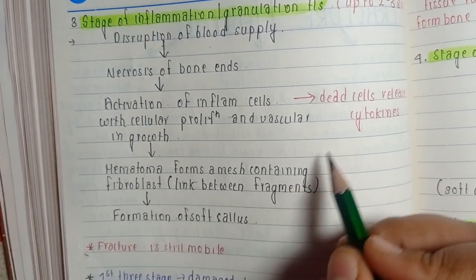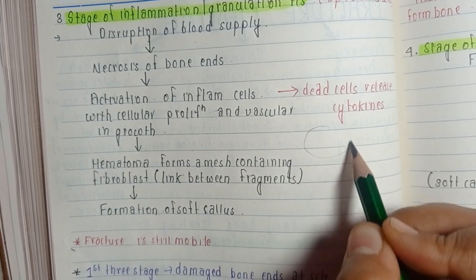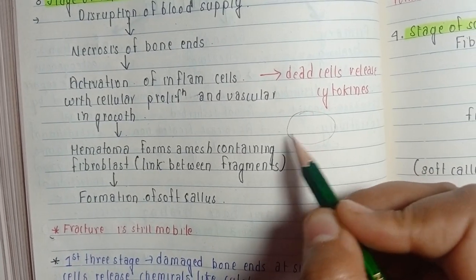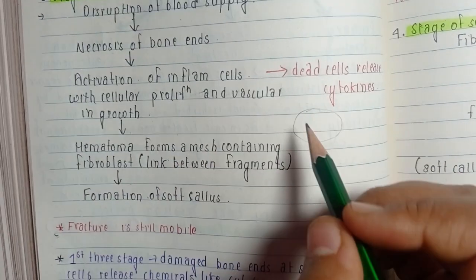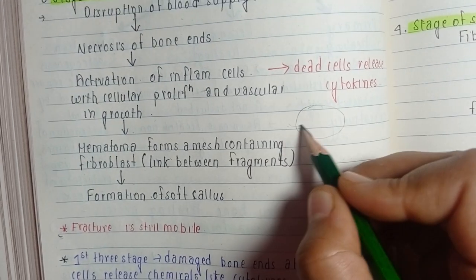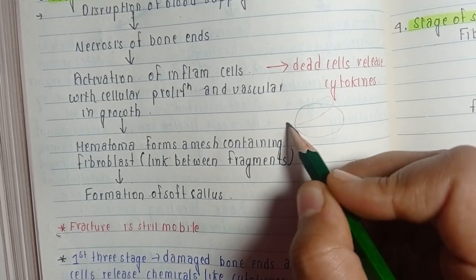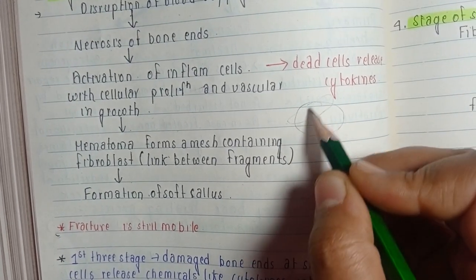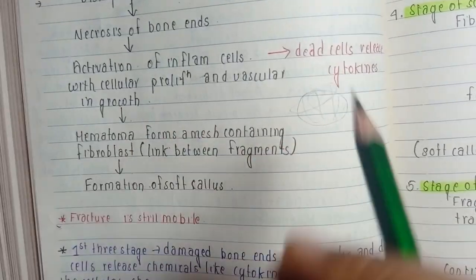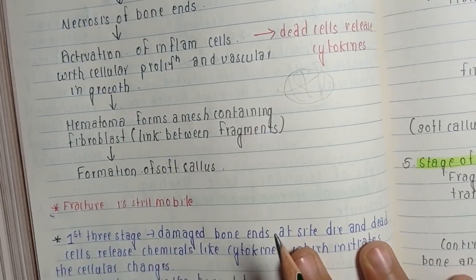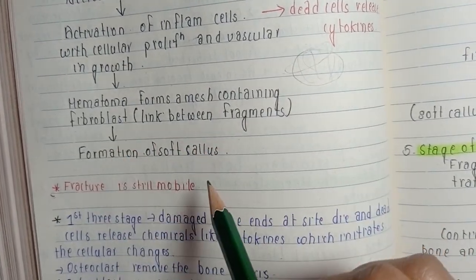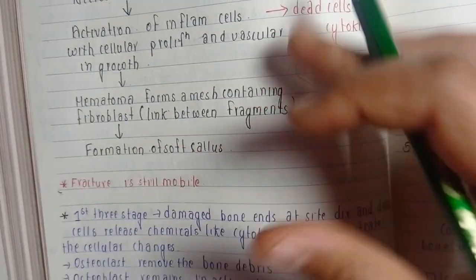The hematoma forms a mesh containing fibroblasts, which act as a link between the fragments. The fibroblast stabilizes the hematoma. After that, there is formation of soft callus. In these first three stages, the damaged bone ends release chemicals like cytokines which initiate cellular changes.